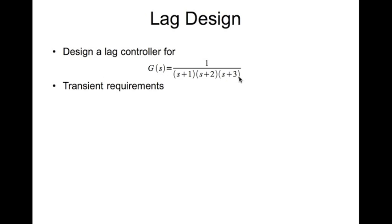So we'll obviously have transient requirements. In this case, the transient requirements are time to peak is π/2 seconds. Lag controller, as I illustrated previously, is similar to PI controller in the sense that it is used to meet steady state error requirements. Here we have steady state error requirements as steady state error should be less than 0.01.